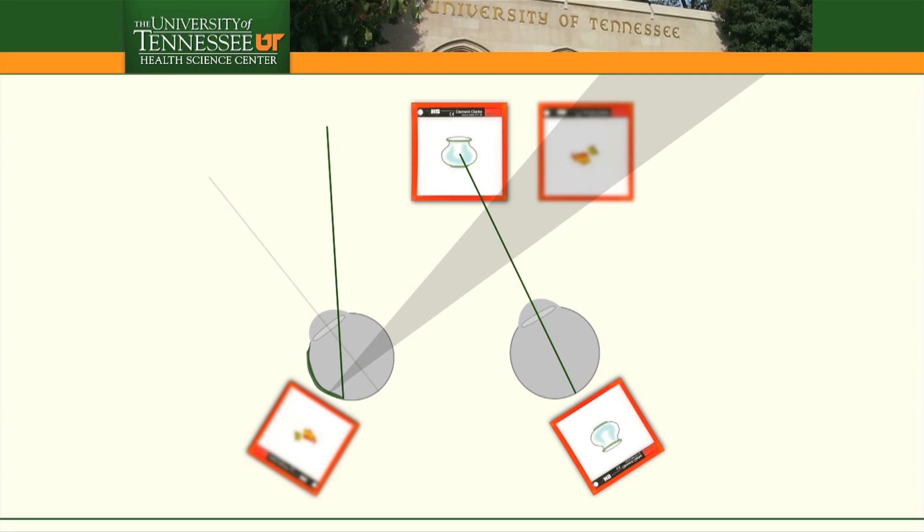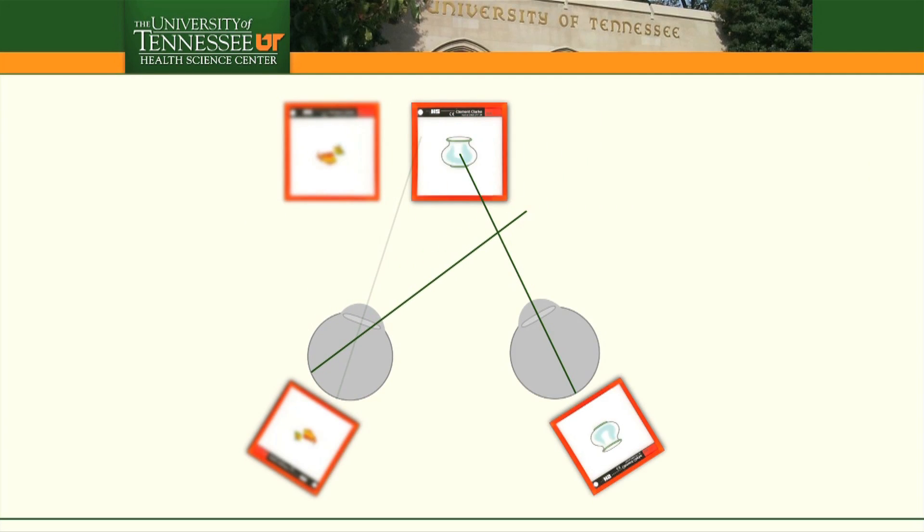A further exodeviation may incur uncrossed diplopia. Images landing on nasal retina have come from the temporal visual field. The image from the left eye is seen on the left side. The image from the right eye is seen on the right side.